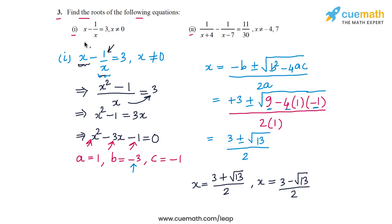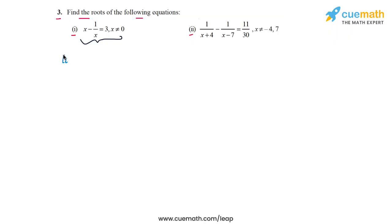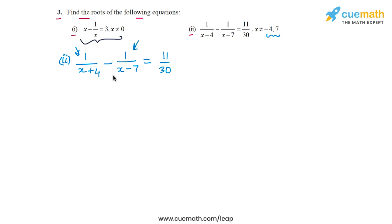Now let's find the values of x which satisfy the equation in part 2. The equation is 1/(x+4) - 1/(x-7) = 11/30, and we're told x ≠ -4 or 7, because if x = -4 the first term's denominator becomes 0, and if x = 7 the second term's denominator x - 7 becomes 0. We need to convert this to standard quadratic form.